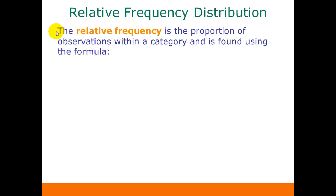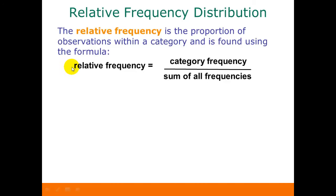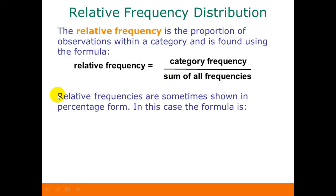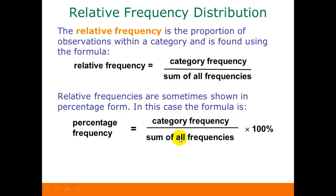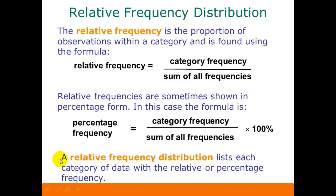Another type of table we can create is a relative frequency distribution. The relative frequency, instead of being the count of how many values are in each category, is the proportion of values within each category. To find the relative frequency for a specific category, we take the frequency for that category and divide it by the sum of all the frequencies — in other words, the total number of observations in our data set. Sometimes we want to represent relative frequencies in percentage form, so we take the category frequency, divide by the total number of observations, and multiply by 100%. A relative frequency distribution lists each category of data and gives the relative frequency or percentage frequency instead of the count.